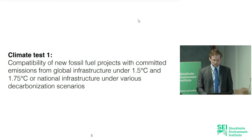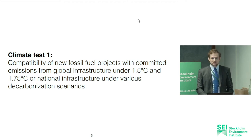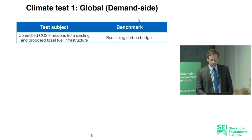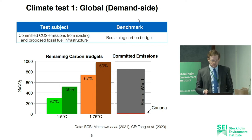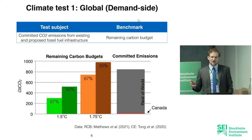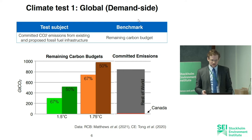Climate test one: we look at carbon budgets for 1.5 and 1.75 degrees and compare this to fossil fuel infrastructure at a global and national scale. The benchmark is the carbon budgets. The latest carbon budgets for 1.5 and 1.75 — as a proxy for well below two degrees — show that committed emissions already exceed 1.75 except at a 50% probability threshold of exceedance, and definitely exceed 1.5.